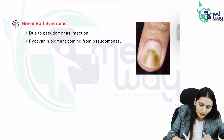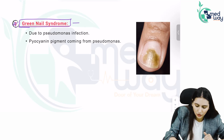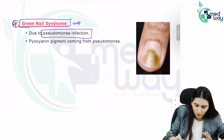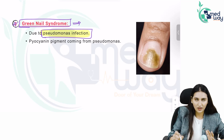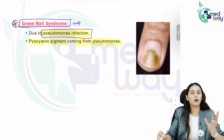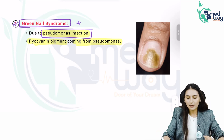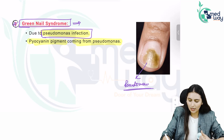The fourth one is green nail syndrome. What happens is that you have a pseudomonas infection — green nail is almost always because of pseudomonas. It is the pyocyanin pigment from pseudomonas that stains your nail. Whenever you see a green nail, think of pseudomonas infection.